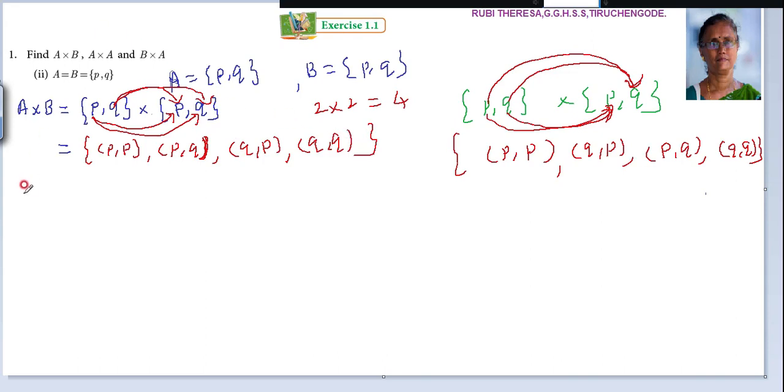Next is A cross A. What is A? {P, Q}. So A cross A is {P, Q} cross {P, Q}. In the same way, you'll get the same answer. No need to pair again: (P, P), (P, Q), (Q, P), (Q, Q).